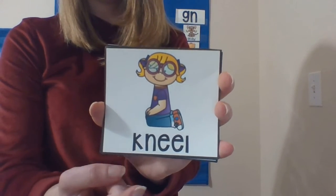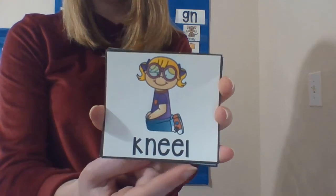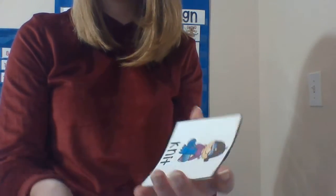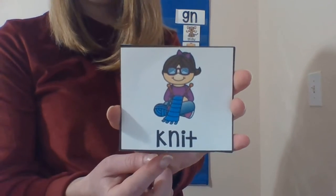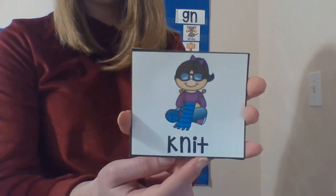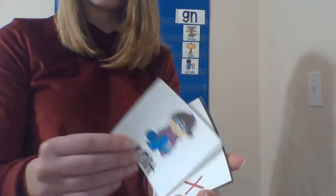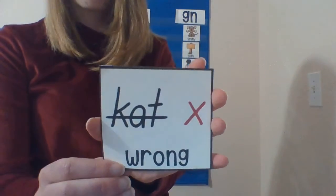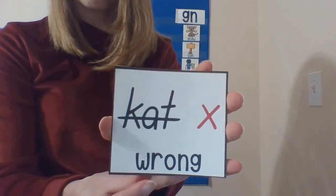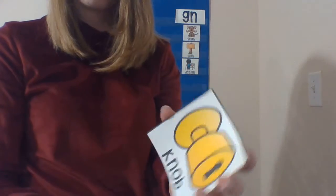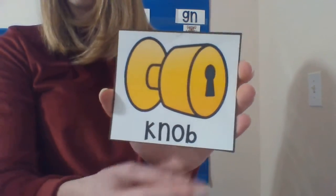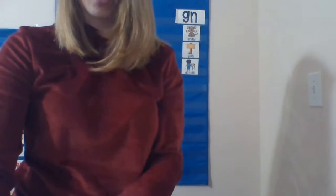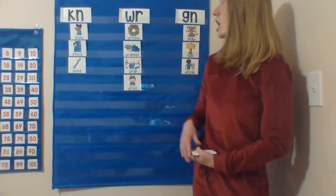The K is a ninja, so we just have kneel. This is something I've been learning how to do - knit, knit. Ninja K doesn't make a sound. Wrong, wrong. And last but not least, knob - like a doorknob.